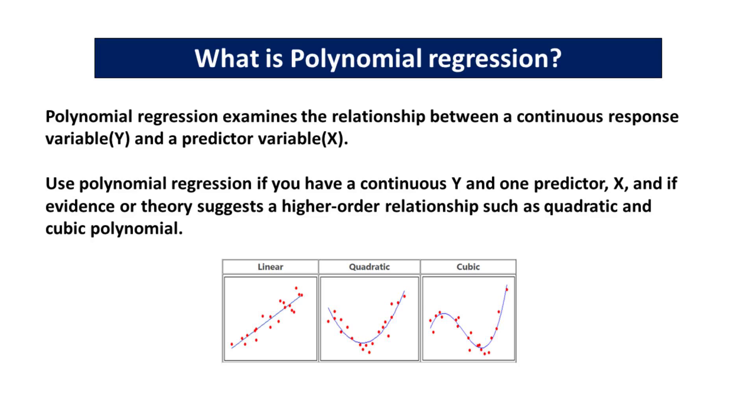Polynomial regression examines the relationship between a continuous response variable y and a predictor variable x. Use polynomial regression if you have a continuous y and one predictor x, and if evidence or theory suggests a higher-order relationship such as quadratic and cubic polynomial.